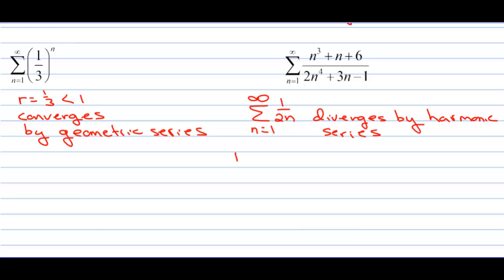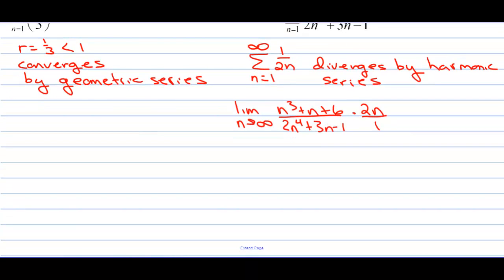Then we've got to keep going with this. We have the limit as n approaches infinity of n to the third plus n plus 6 over all this junk times 2n over 1. Now we can multiply the 2n through, but we would get 2n to the fourth over 2n to the fourth. Only the leading terms matter when you're going off to infinity. So this is equal to 1, which you have to say is finite and positive, or either way around. Positive and finite, either way. So diverges by limit comparison test.